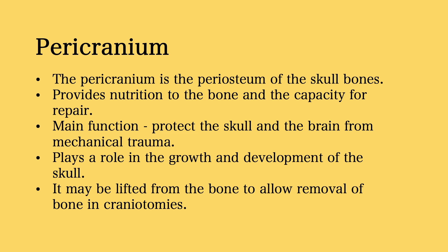The main function of the pericranium is to protect the skull and the brain from mechanical trauma. It helps to absorb shock and prevents injury from impacts or blows to the head. The pericranium also plays a role in the growth and development of the skull — it is a dynamic tissue capable of producing new bone cells, helping the skull grow and adapt to changes in the body. It may be lifted from the bone to allow for bone removal in certain procedures such as craniotomies.